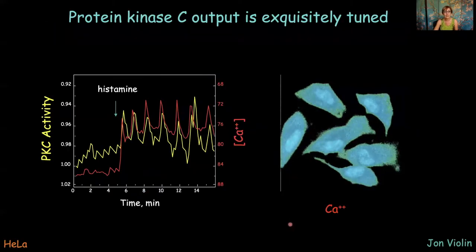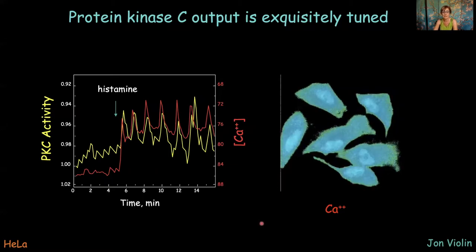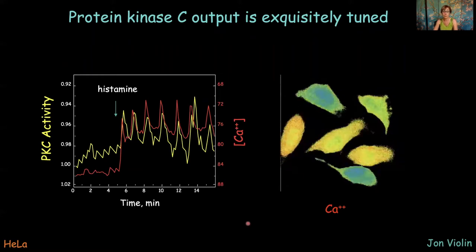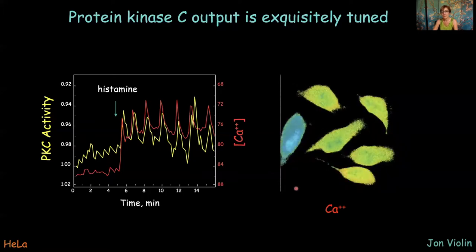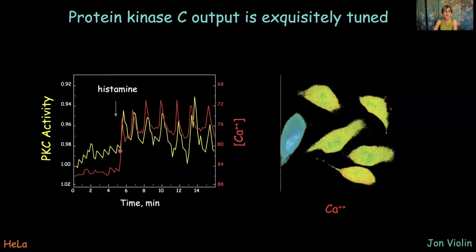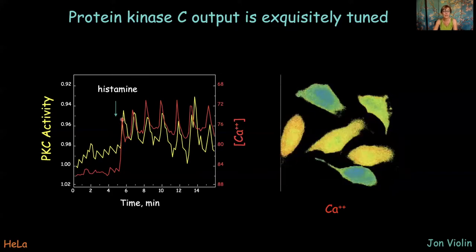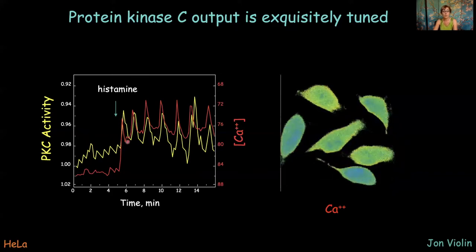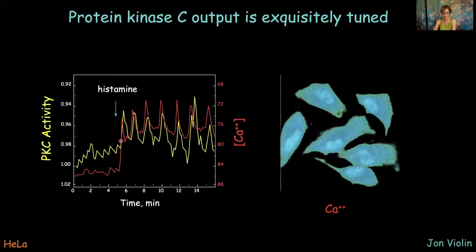The activity and function of the enzyme is exquisitely tuned. This is nicely illustrated by looking at its activity in real time in live cells, which we're able to do with genetically encoded reporters developed in collaboration with Roger Chen. In HeLa cells stimulated with the agonist histamine, we see really nice oscillations in intracellular calcium. When we monitor PKC activity in the same cells, we find that its activity is phase-locked with the calcium oscillations — when calcium goes up, PKC activity goes up, and when calcium goes down, our reporter becomes dephosphorylated. It is really an exquisitely tuned activity, very sensitive to its second messengers.